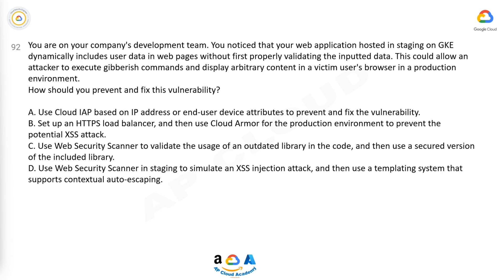A. Use Cloud IAP based on IP address or end user device attributes to prevent and fix the vulnerability. B. Set up an HTTPS load balancer and then use Cloud Armor for the production environment to prevent the potential XSS attack. C. Use Web Security Scanner to validate the usage of an outdated library in the code and then use a secured version of the included library. D. Use Web Security Scanner in staging to simulate an XSS injection attack and then use a templating system that supports contextual autoescaping.